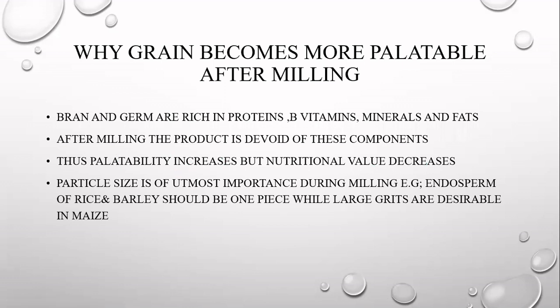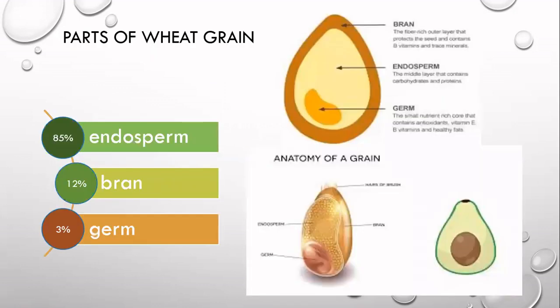Particle size is considered most important during milling. For example, the endosperm of rice and barley should remain in one piece, while large grits are desirable in maize. If you get broken rice that is undesirable. So particle size is very important during the milling of grains.